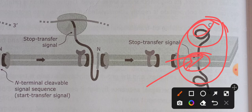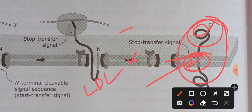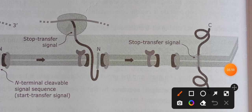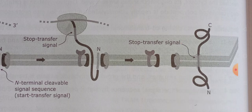Examples of Type 1 transmembrane proteins include the LDL receptor (low-density lipoprotein receptor), insulin receptors, and growth hormone receptors. These transmembrane proteins commonly function as receptors in the cell membrane.